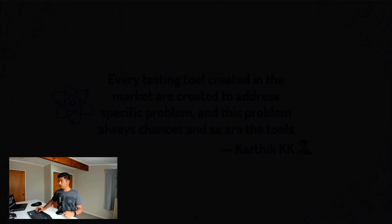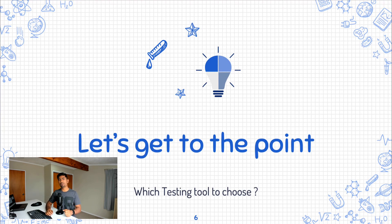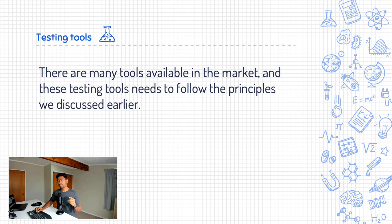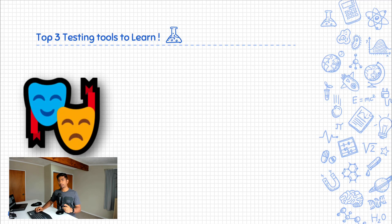Let's get to the point: which tool to start with? There are many automation testing tools on the market, but based on all the principles we discussed, I have chosen the three most important testing tools to learn in 2021 if you have not already. These are the testing tools you need to watch in 2021 because they are really emerging. The first one is Playwright — I've been talking about Playwright a lot. It is cross-platform, open source, and free to use, and it supports all the modern browsers.